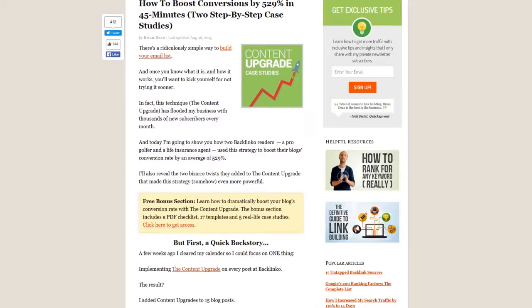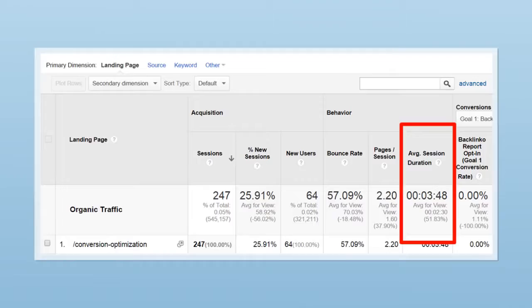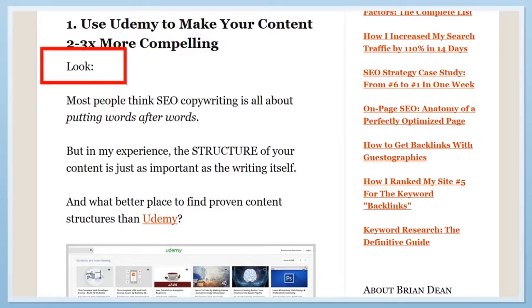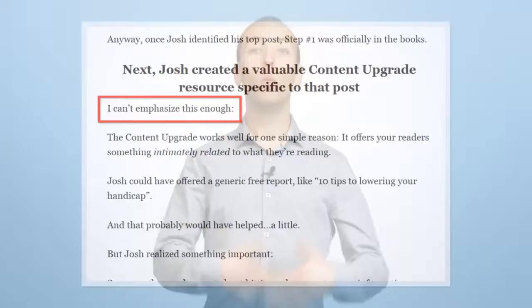For example, I have a post on my site called How to Boost Conversions by 529%. And the average time on page for that article is almost four minutes. And a good chunk of that above average time on page is due to bucket brigades like this, and this, and this.